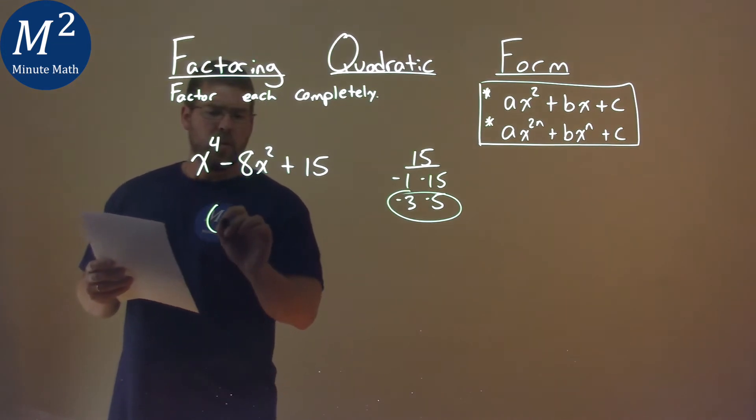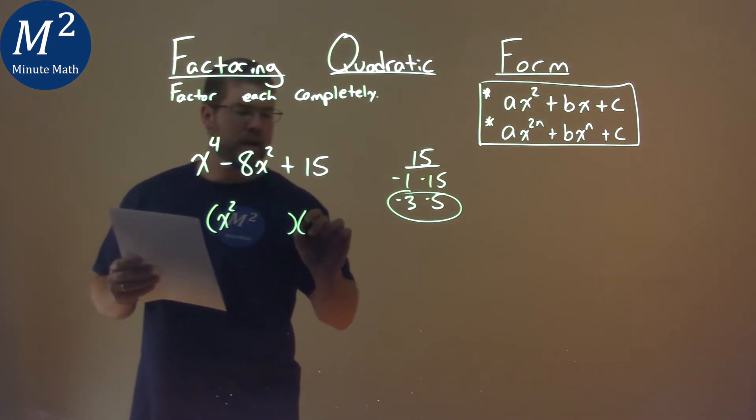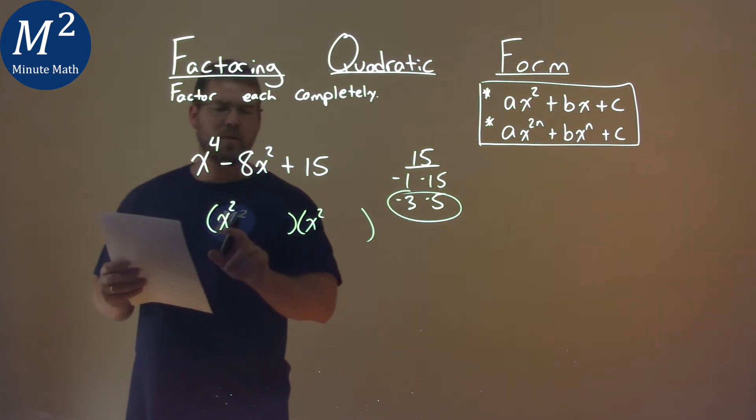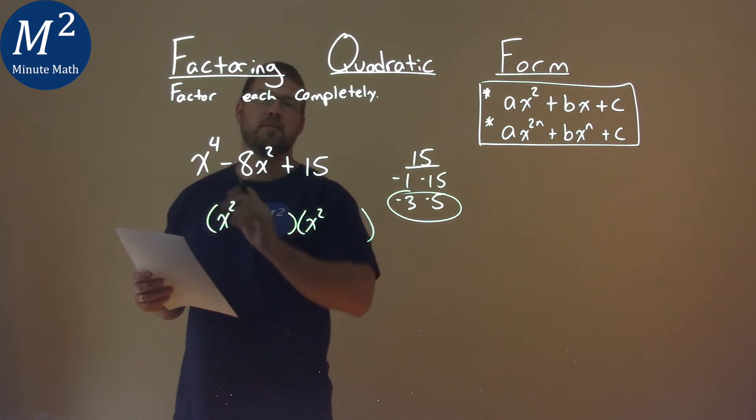So let's keep on going here. Since we have it in quadratic form, it's very similar, but we have x squared times x squared, which gives us that x to the fourth.